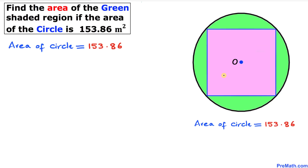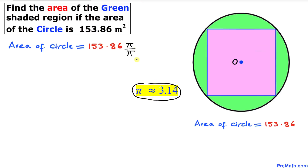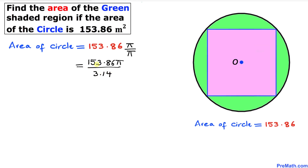The area of this circle is 153.86. We want to write this in terms of pi. We multiply and divide by pi, and since pi equals 3.14, we replace the denominator with 3.14. This gives us 153.86 pi divided by 3.14, which simplifies to 49 pi. So the area of this circle is 49 pi.